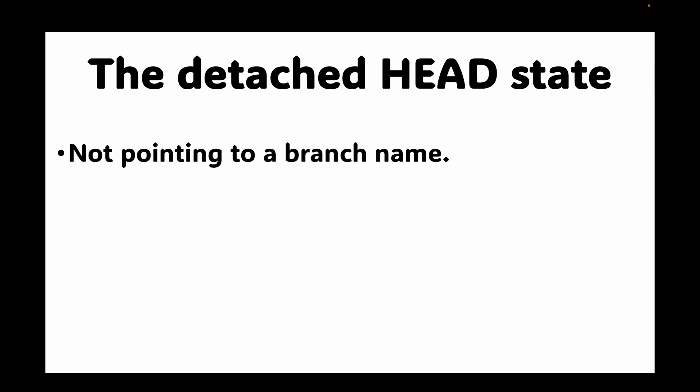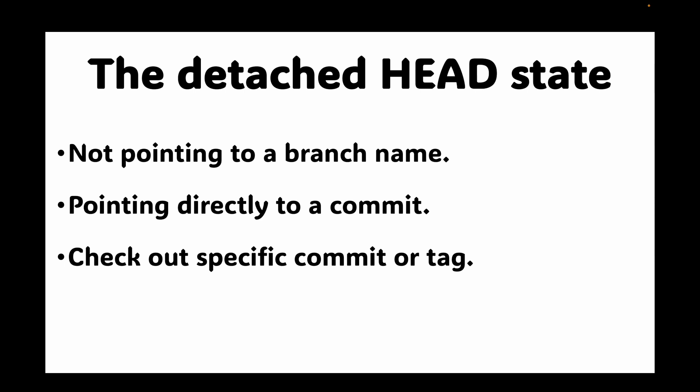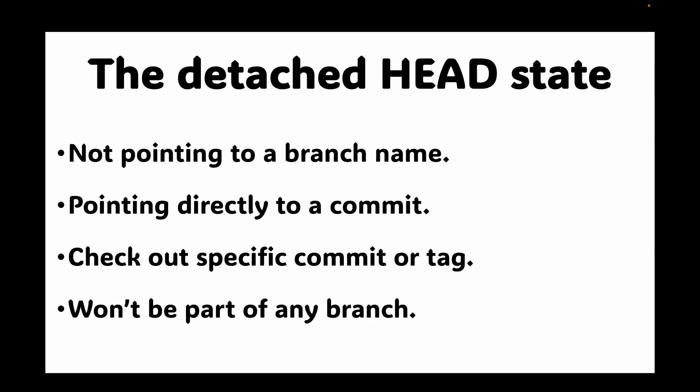The first problem we are going to talk about is the detached HEAD state. It can look scary but it's a cool git concept that just means your HEAD isn't pointing to a branch name — it's pointing directly to a commit. This happens when you check out a specific commit or a tag. If you make new commits in this state, they won't be part of any branch and you might lose them when you switch branches.